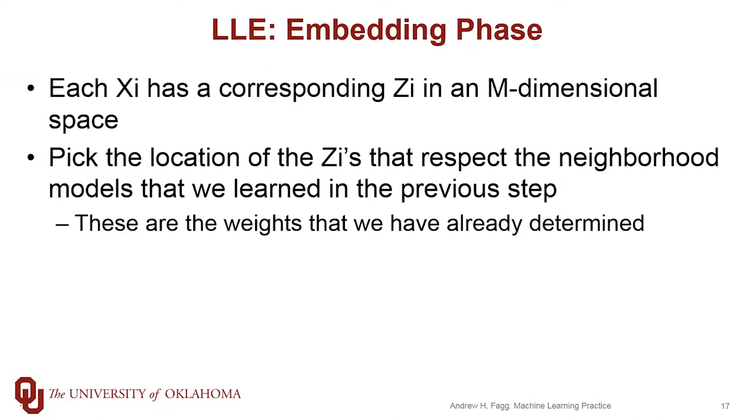We get to pick the location of these ZIs, but we're going to do so such that they respect the neighborhood relationships that we learned in the previous phase. And in particular, those neighborhoods are expressed in terms of the weights that we've already learned.